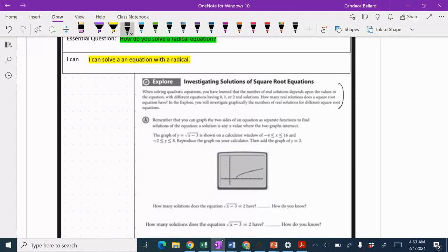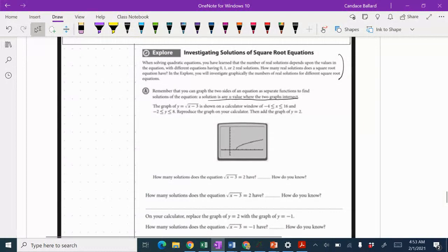Remember that you can graph the two sides of an equation as separate functions to find the solution to the equation. A solution is any x value where the two graphs intersect. We're going to start by graphing y equals the square root of x minus 3 on this viewing window, and then add the graph of y equals 2.